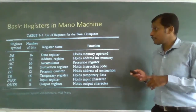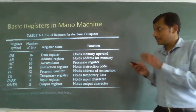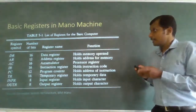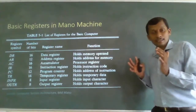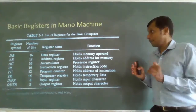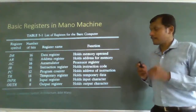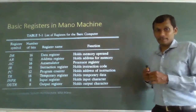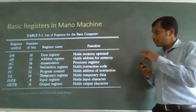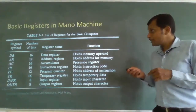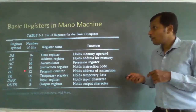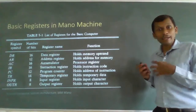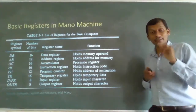Looking at the table columns: register symbol is a short name for the register (DR, AR, AC, etc.), number of bits shows the storage capacity, register name tells what the register is, and function explains why it is used. The number of bits allocated for different registers are not the same — there are some 16-bit registers and some 12-bit registers. Why is there a difference?